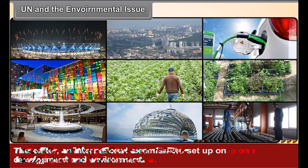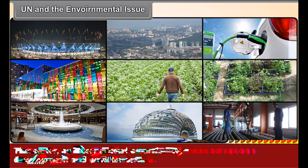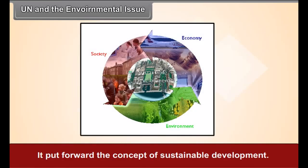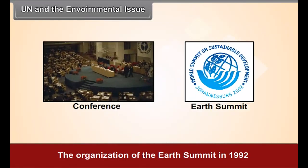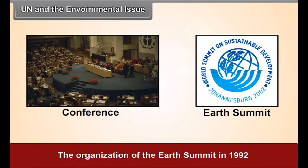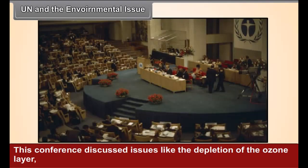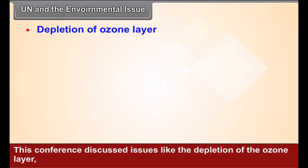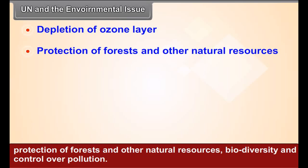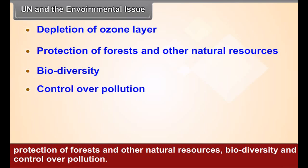Thereafter, an international commission was set up on Development and Environment. It put forward the concept of sustainable development. The organization of the Earth Summit in 1992 was another important step in the efforts for the protection of environment. This conference discussed issues like the depletion of the ozone layer, protection of forests and other natural resources, biodiversity and control over pollution.